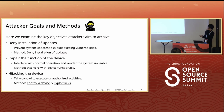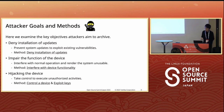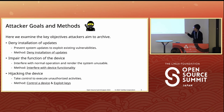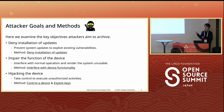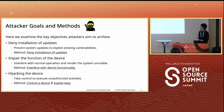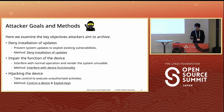Let's explore the well-known attacks, starting with the attacker's motivation and goals. We can categorize the goal into three main types. First is to deny installation of updates — the aim is to prevent the system from being updated in order to exploit existing vulnerabilities. Second is to impair the function of the device — the goal is to interfere with normal operation and render the system unusable. Third, the worst case scenario, is hijacking the device — the attacker aims to take control and execute unauthorized activities.